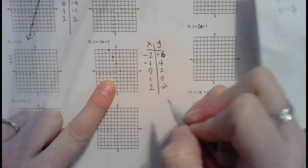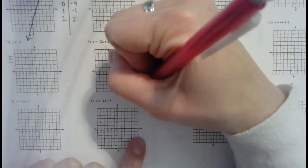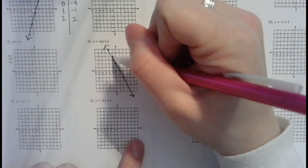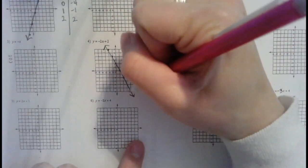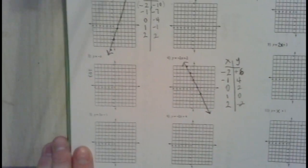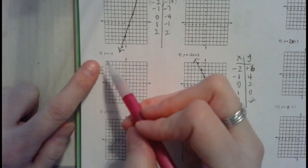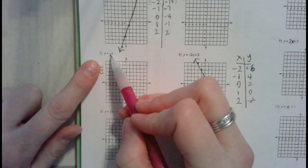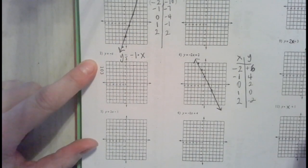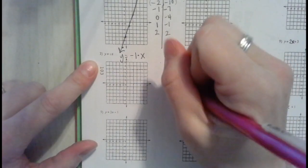Let's do one more before you practice on your own. For equation three, the negative in front is really the same as y equals negative 1 times x — mathematicians are lazy and don't write that 1. We make a table of values the same way, picking x values negative 2, negative 1, 0, 1, 2. I always stick close to zero with these numbers.